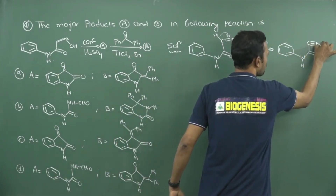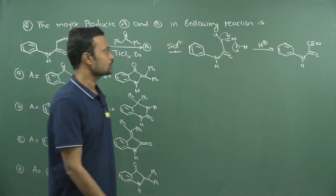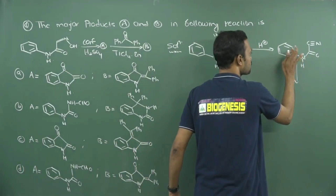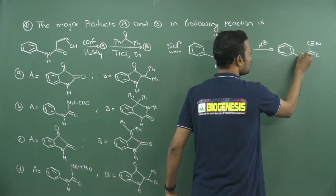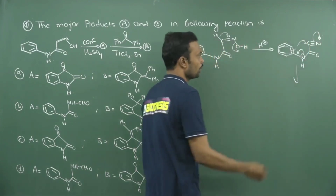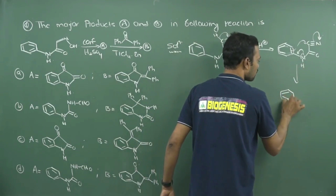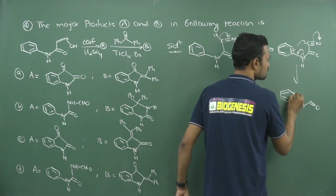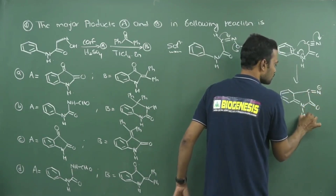Here carbon-nitrogen triple bond formation will take place. After getting this, the nitrogen lone pair is present — this will accelerate the reaction. Here this double bond — lone pair migrates here, it will attack, and this will migrate. After getting that, you will get a negative charge over there; double bond, and here nitrogen C double bond O, and this is connected to carbon bearing negative charge like this.